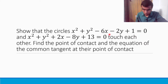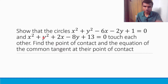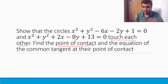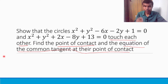We are given two circles and we have to show that they touch each other. Next, we have to find the point of contact and the equation of the common tangent at their point of contact. So there are three things being asked: first, circles touch each other; second, point of contact; and third, equation of the common tangent at the point of contact. I'm going to go step by step, so please stay with me.